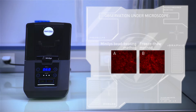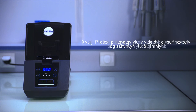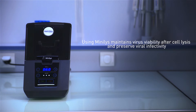The viral vector facility discovered that the Minilis offers an efficient way to release rAAV vectors without impairing viral effectivity and transduction efficiency. It is a better alternative to the previous method since it saves a significant amount of sample preparation time.